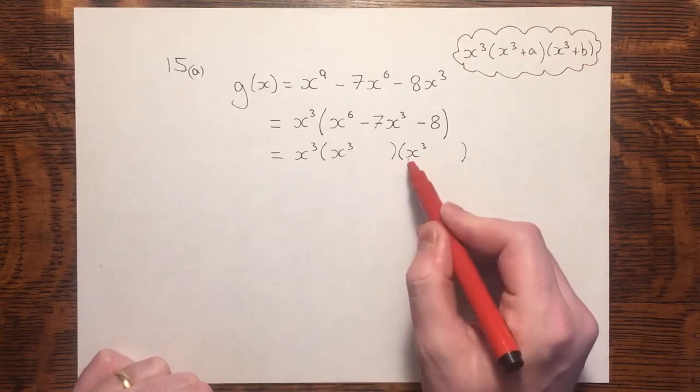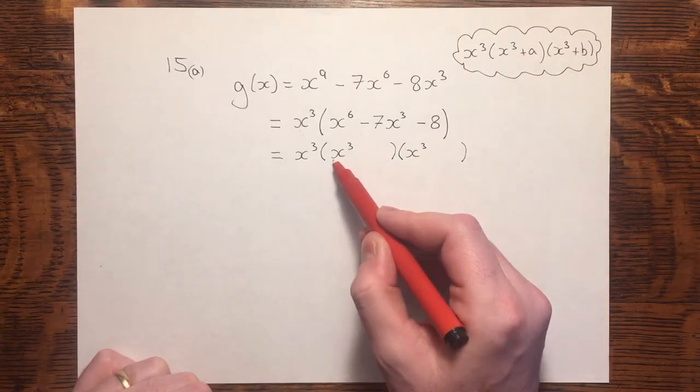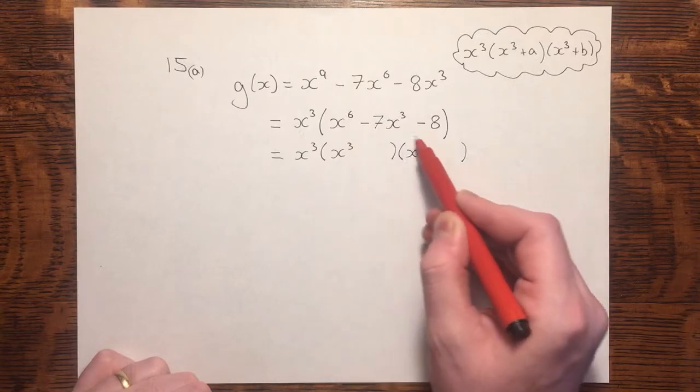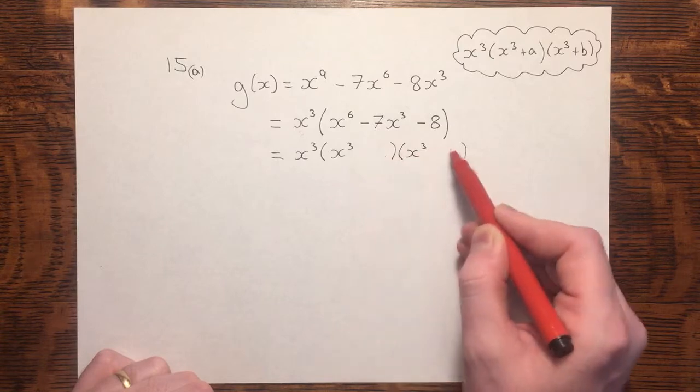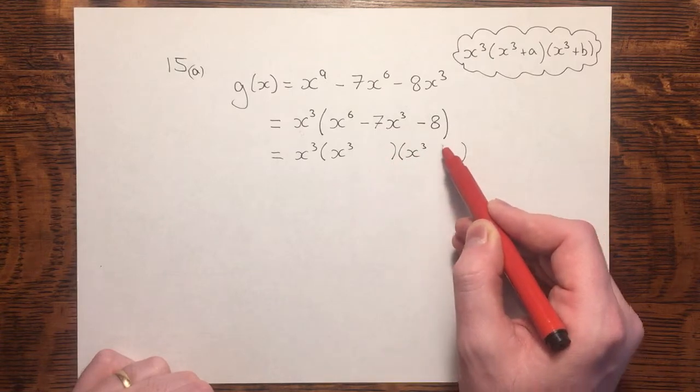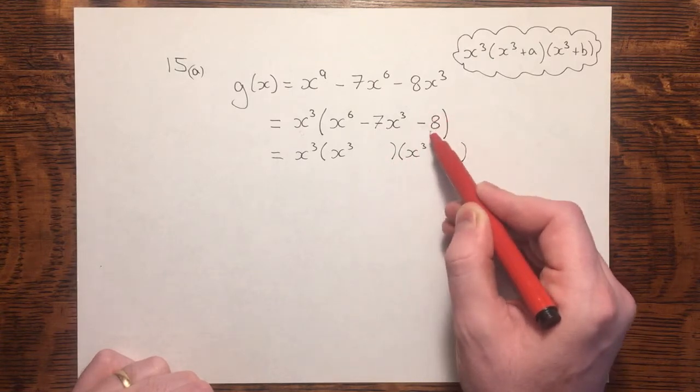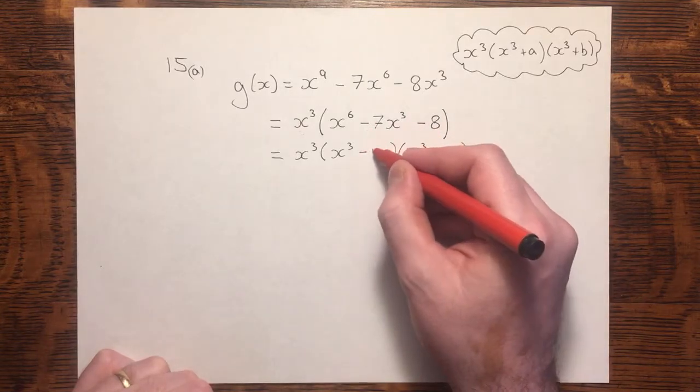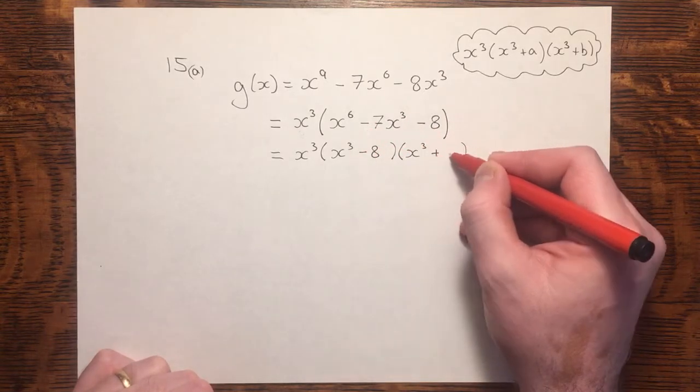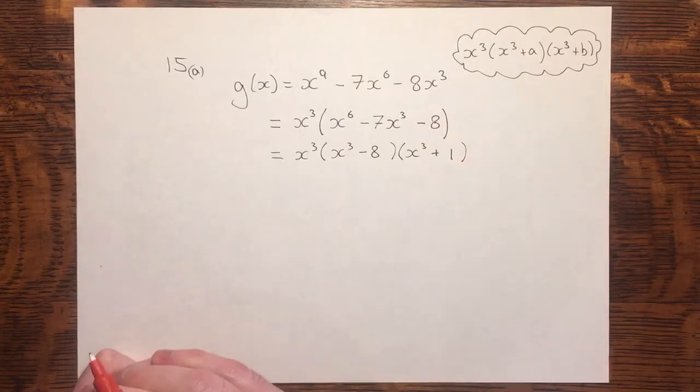Well, if I was expanding these brackets, x to the power 3 times x to the power 3 would give me the x to the 6. These two numbers here must multiply to give me minus 8, but add up to give me minus 7. Minus 8 times positive 1 gives me minus 8, and minus 8 plus 1 gives me minus 7.